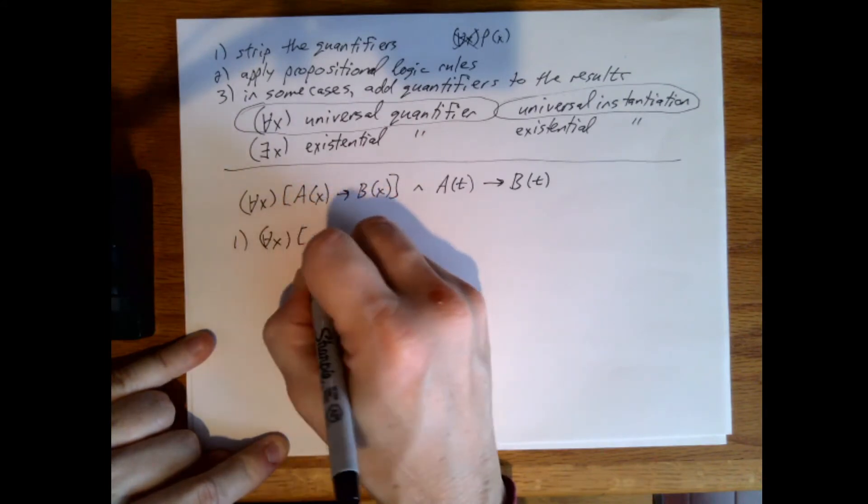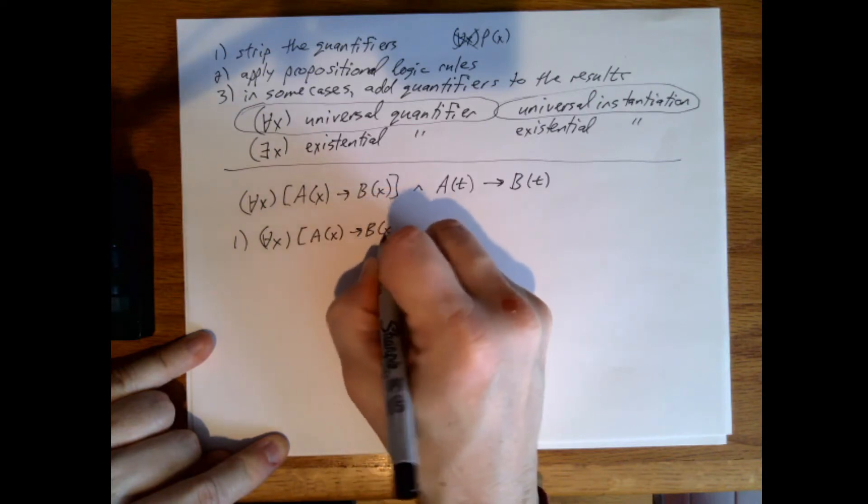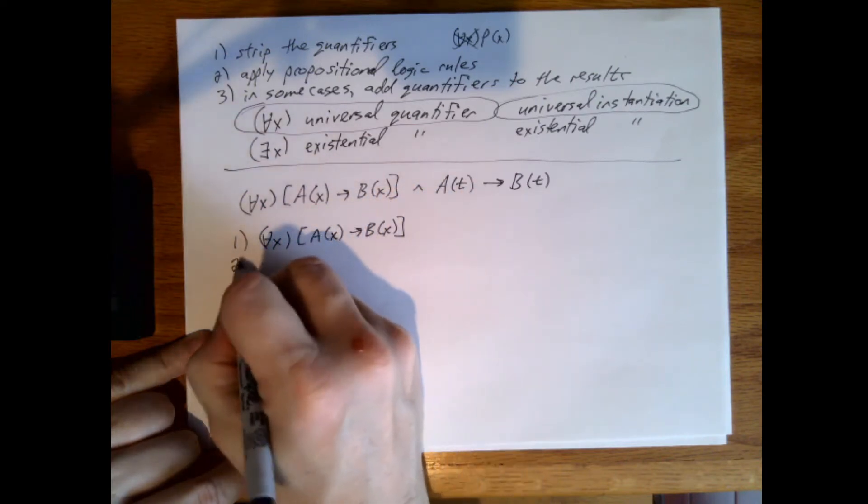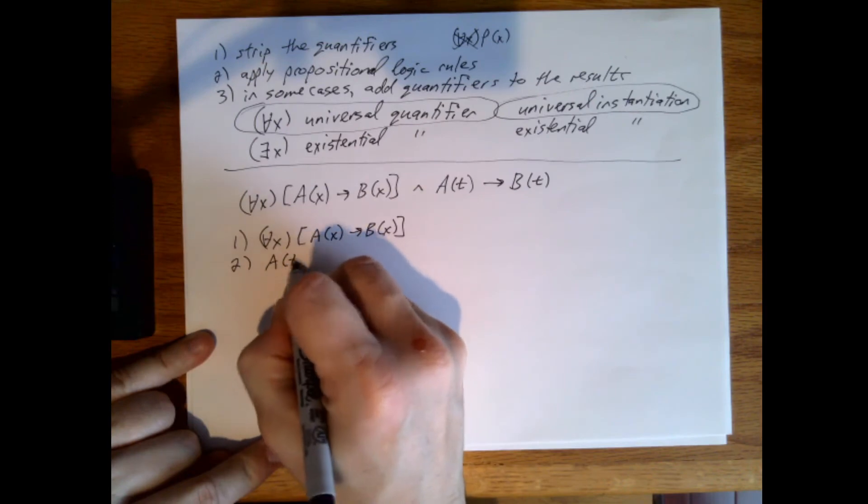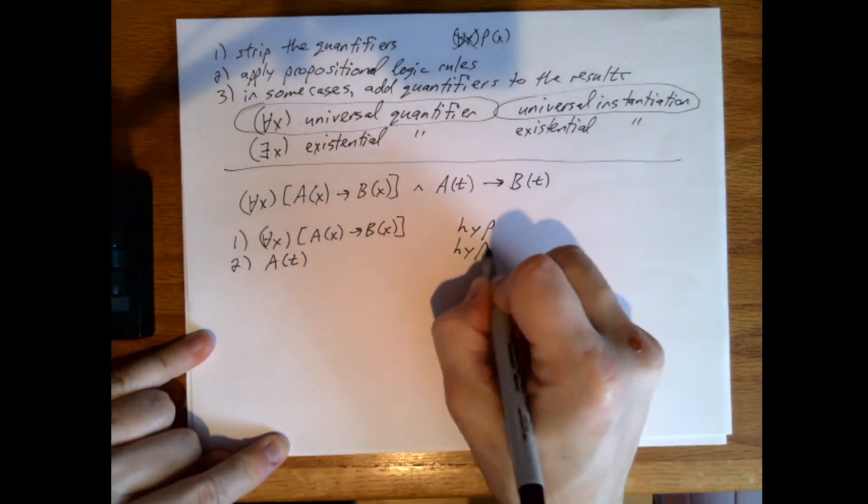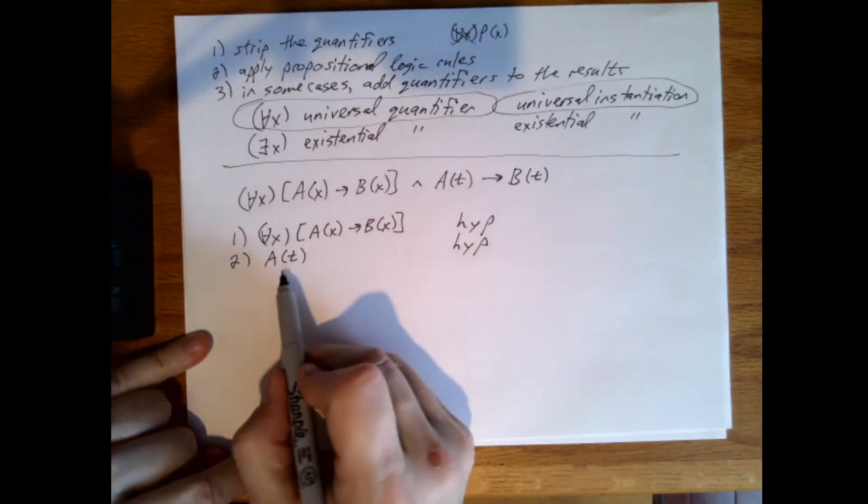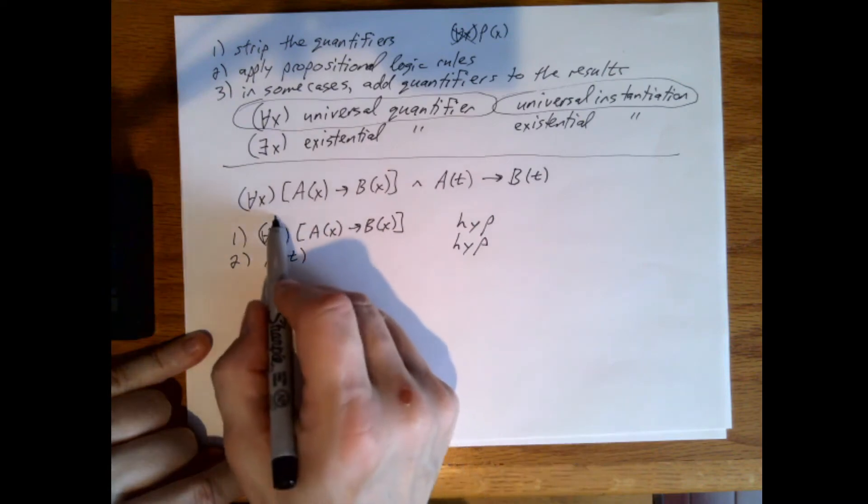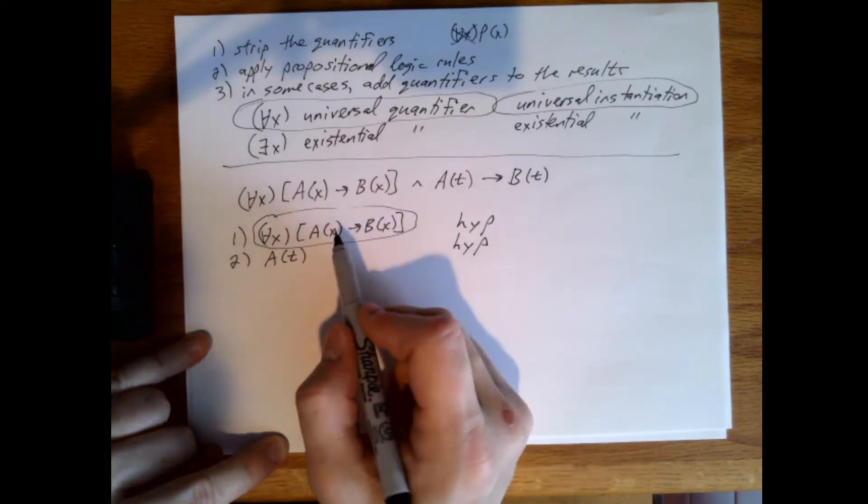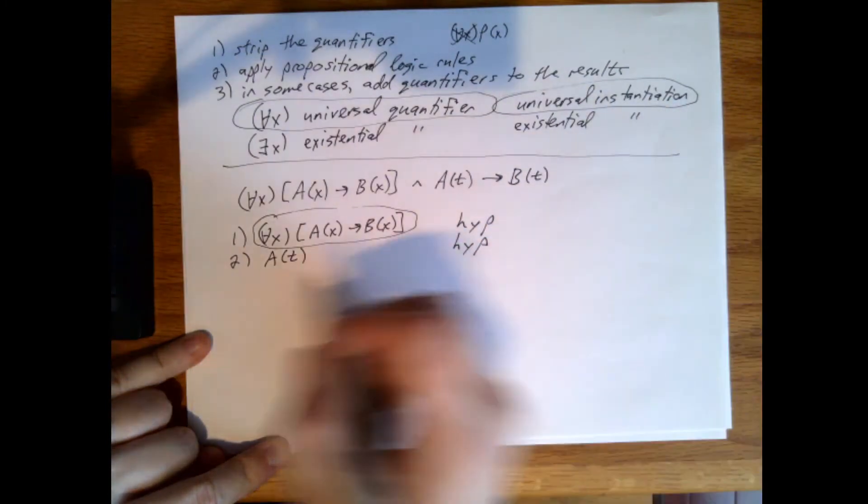We'll have our hypothesis, just like we did before. This is hypothesis, this is hypothesis. Now what we want to do is - here I'm talking about a of t - I want to take this right here and perform this instantiation.